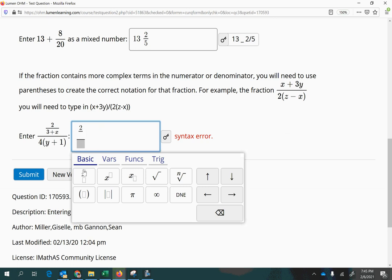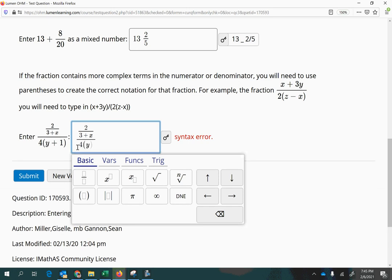Oops, somehow I missed. There we go. Make sure you're underneath the division sign. And then the bottom is 4 times y plus 1.